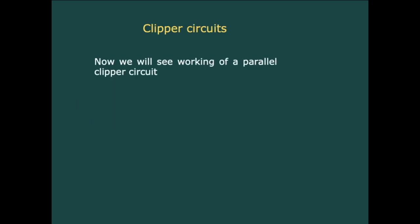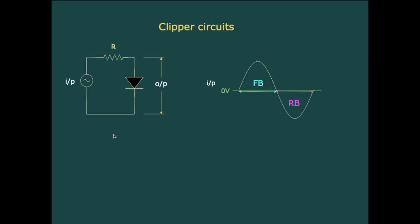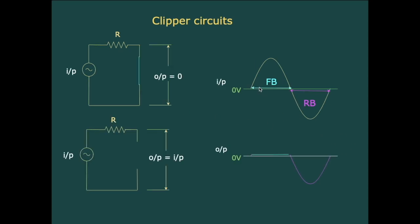Now we will see the working of a parallel clipper circuit, where the diode is connected parallel to the output terminals. Giving a sine wave as input, during the positive half the diode is forward biased since the anode is at higher potential than the cathode, acting as a closed switch and making the output voltage equal to zero. During the negative half the diode is reverse biased, acting as an open switch, so the output equals the input voltage and the positive half is clipped off.